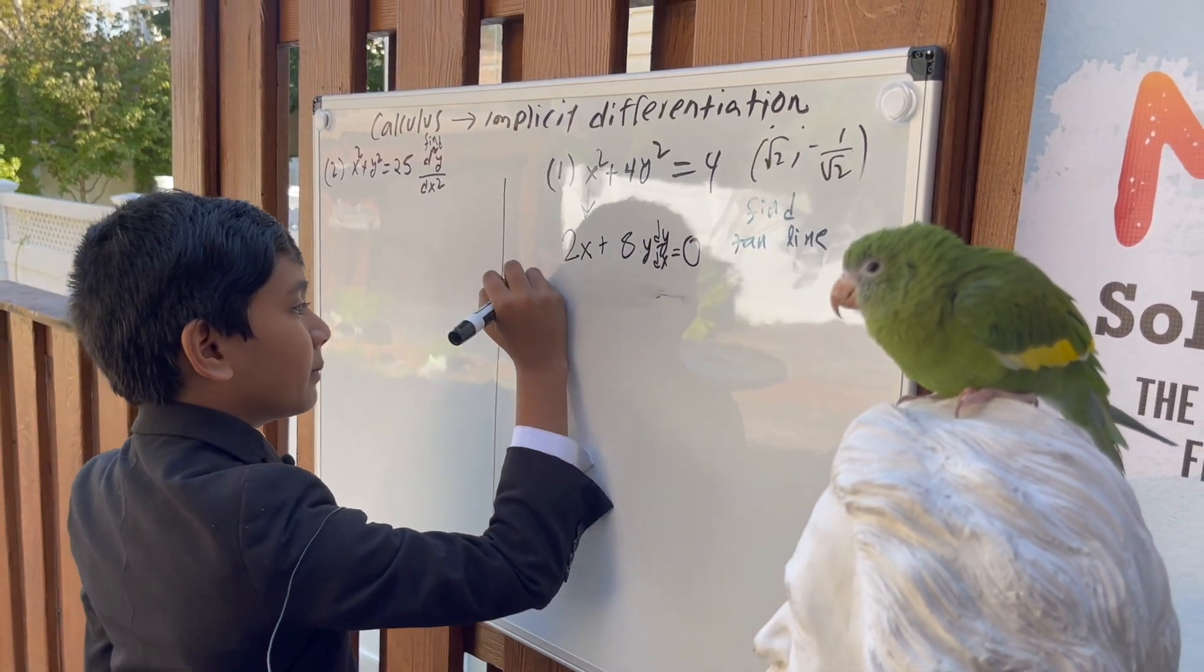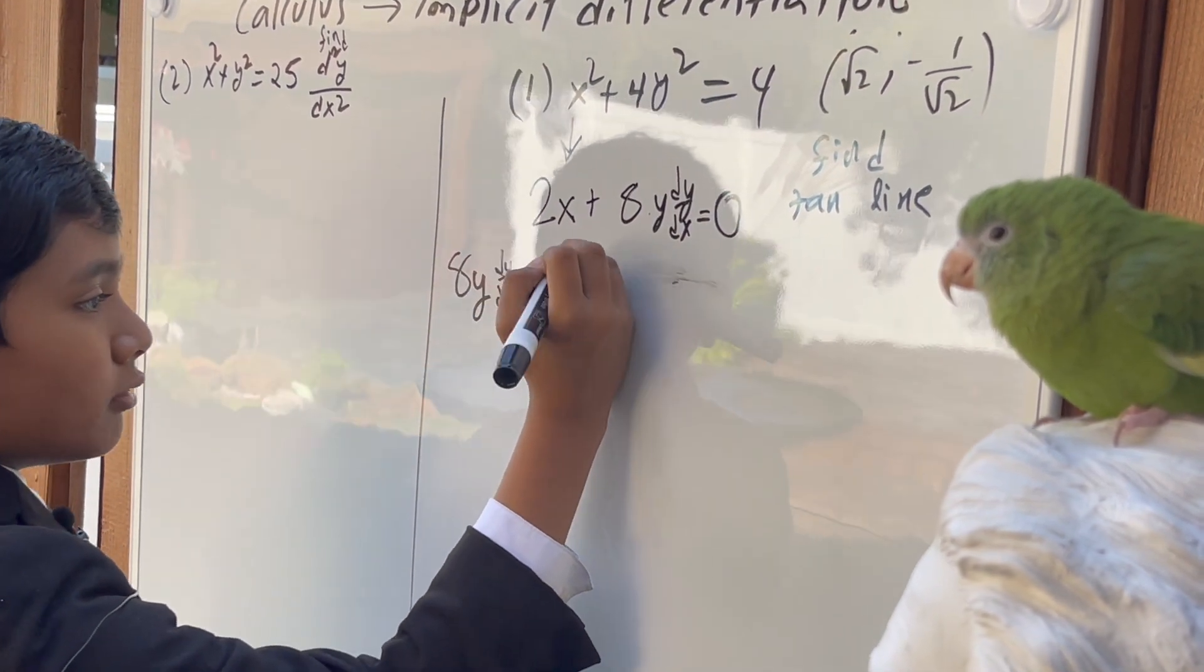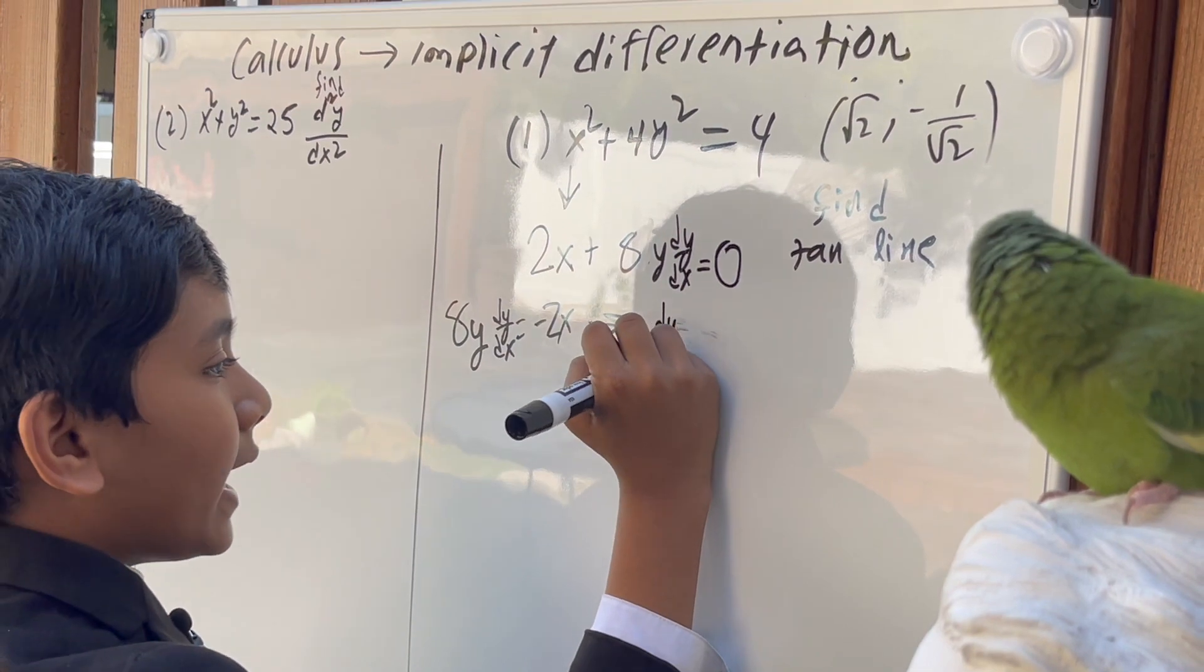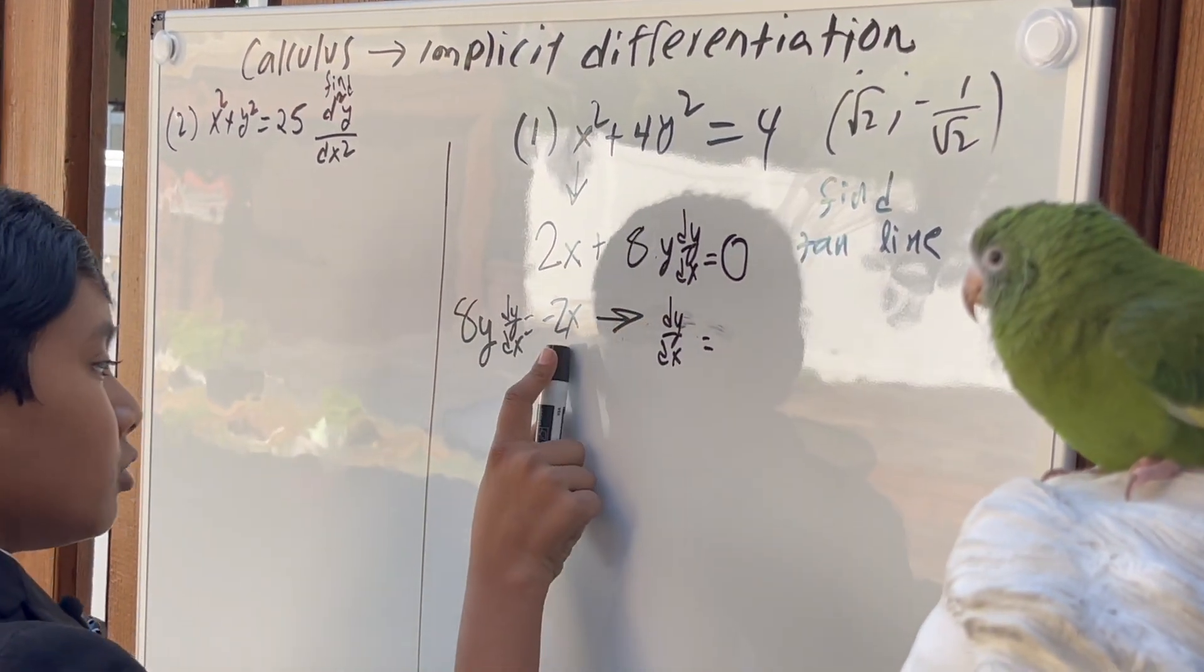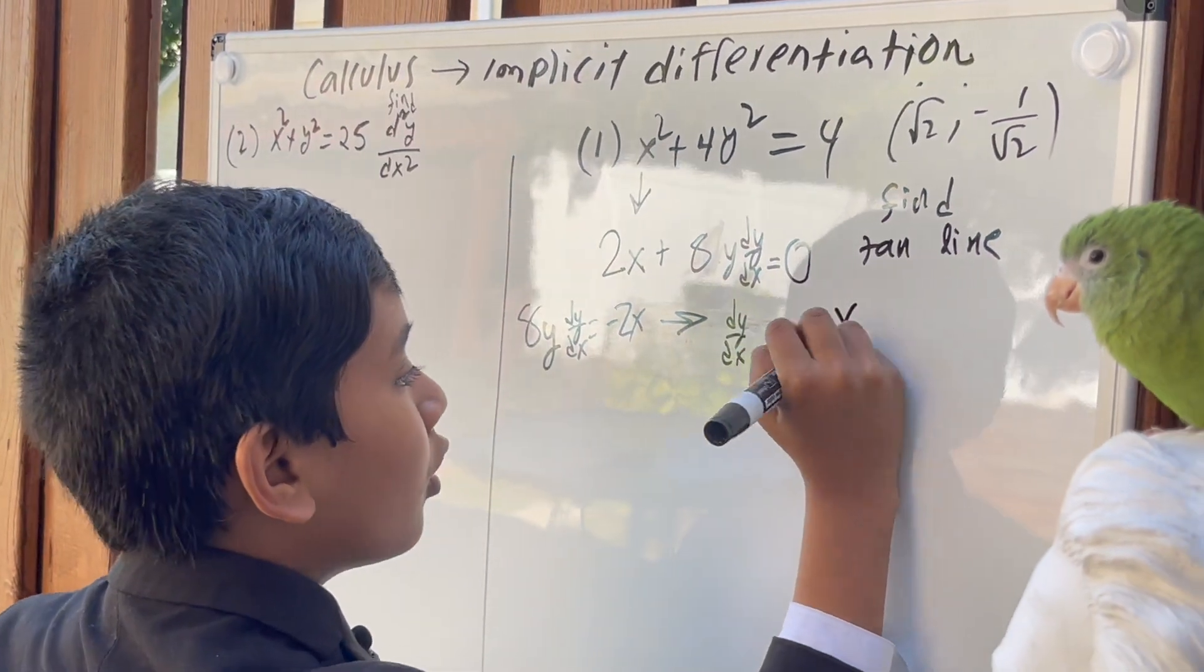Let me actually start from here. So, negative 2x, so that becomes dy/dx equals negative 2x over 8y, and you can reduce that to negative x over 4y.